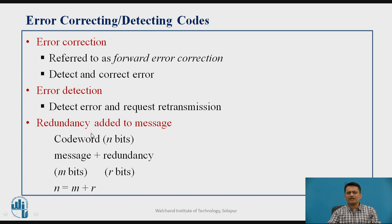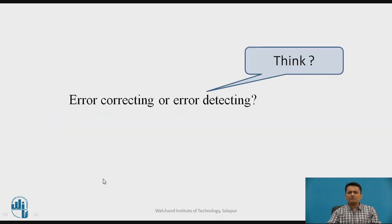Whether you are using error correction or detection, what you do is: suppose n number of bits you are sending as a code word. That n bits will be made up of actual m number of message bits, to which r redundant bits are added. So the actual code word sent will have message bits along with some redundant bits, and these redundant bits give you the ability to detect or correct the error.